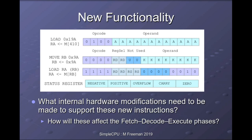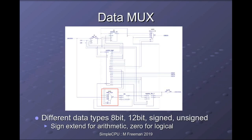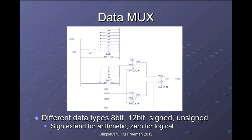In the previous lecture we also looked at adding additional instructions: expanding memory from 256 locations to 4K with an associated address bus increase from 8 to 12 bits, and adding register file and register indirect addressing modes. One of the first hardware changes was to the data multiplexer. Previously we used only 8-bit values, but now we use 8-bit immediate values, 12-bit addresses, and 16-bit data values from registers and external memory, with both signed and unsigned representations, requiring modifications to the data multiplexer.